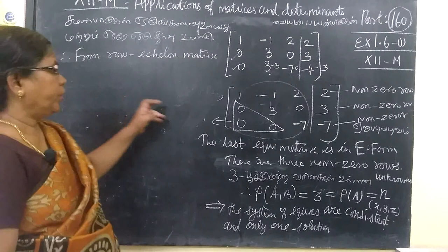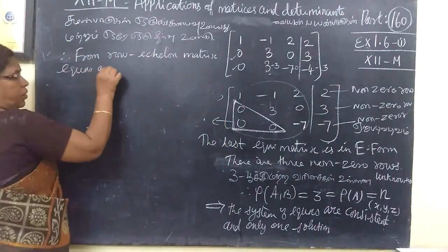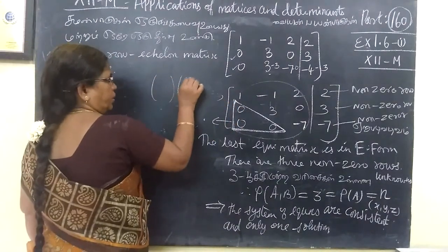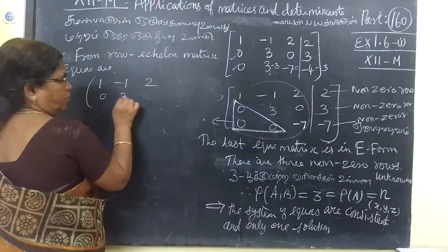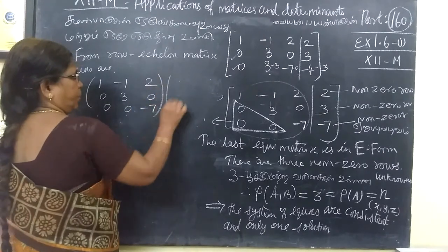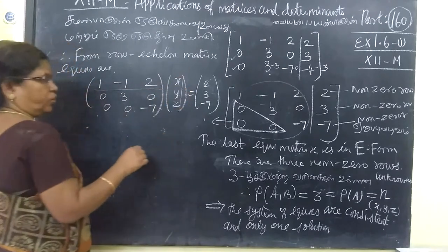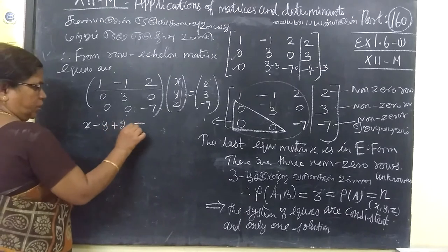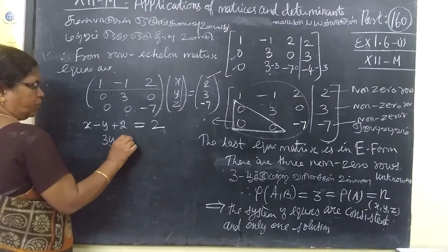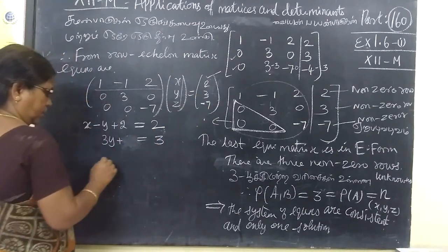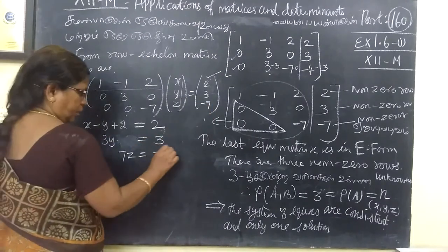From the row echelon matrix, form the equations. Row 1: x - y + 2z = 2. Row 2: 0·x + 3y + 0·z = 3, so 3y = 3. Row 3: 0·x + 0·y - 7z = -7. From row 3: -7z = -7, so z = 1... wait, z = -7/-7 = 1. From row 2: y = 1.